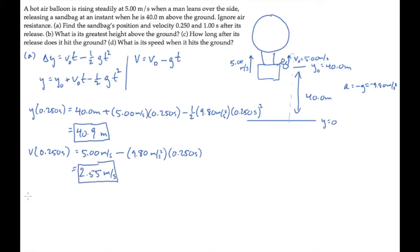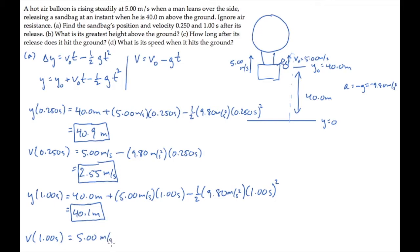At the second time of one second, do the same calculation with the new time to find that the height is 40.1 meters above the ground. And the velocity in the same way, finding that it equals negative 4.80 meters per second. The negative sign there tells you that it's moving down at that time.